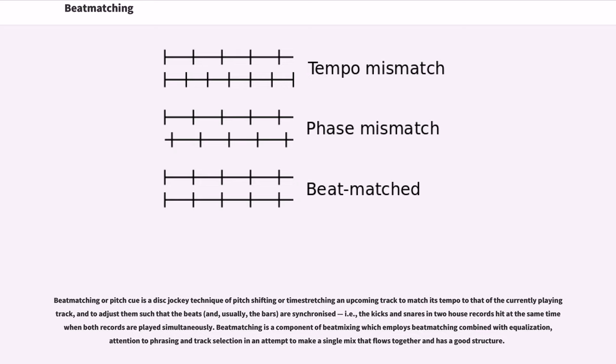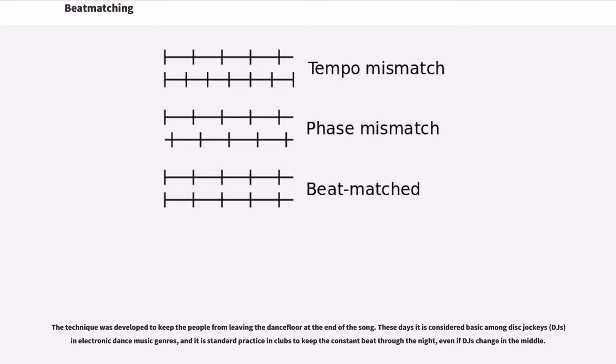The kicks and snares in two house records hit at the same time when both records are played simultaneously. Beatmatching is a component of beat mixing, which employs beatmatching combined with equalization, attention to phrasing, and track selection in an attempt to make a single mix that flows together and has good structure.